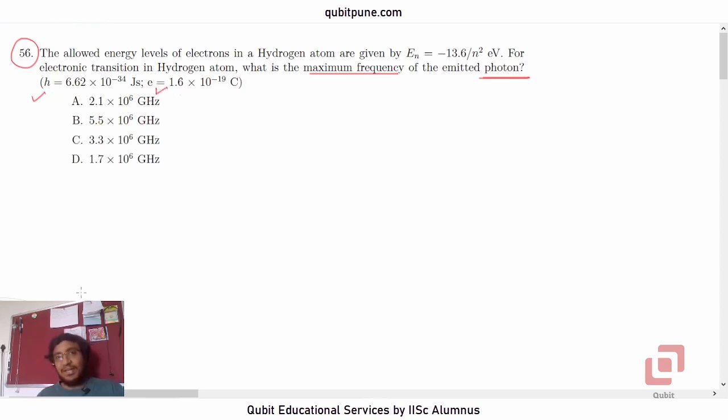Now two things are necessary to solve this problem. First thing is the connection between the energy of the photon and the frequency. Because we want to find the frequency. So this is the relation E is equal to h nu. But here E has to be in joules.